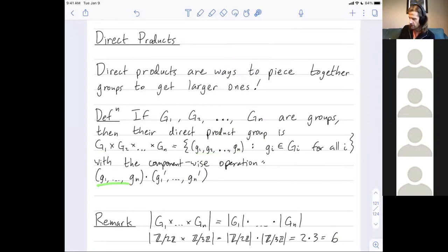The way I combine them is just component-wise. Little g1 and little g1' both live in the group G1, so I can multiply them in the group capital G1. Sitting here I have little g2 and little g2'. They're both elements in the group G2, so I can combine them in that group G2. Do this all the way down until I get to elements little gn and little gn'. They both live in this group capital Gn, so let's combine them in that group.